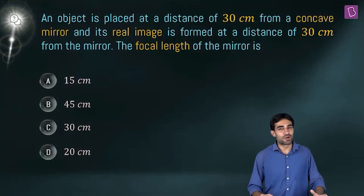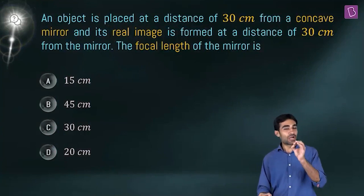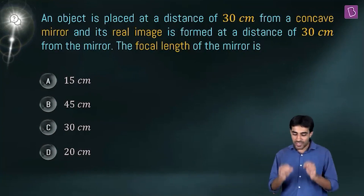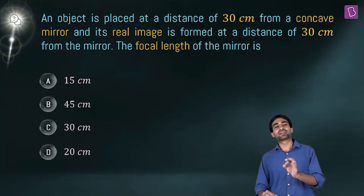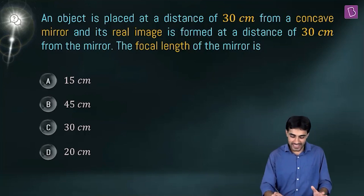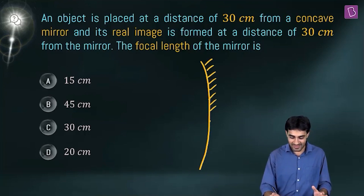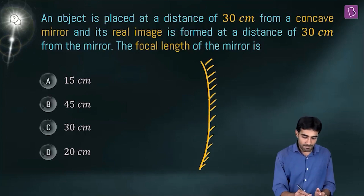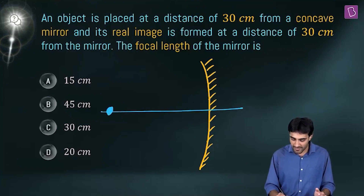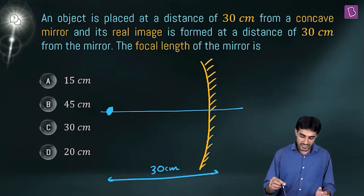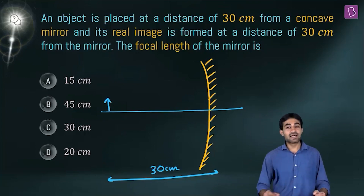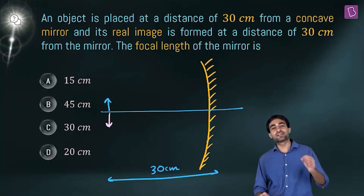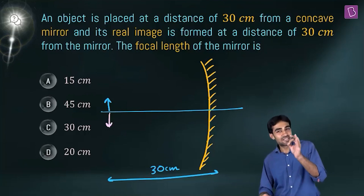Next question: an object is placed at a distance of 30 centimeters from a concave mirror, and its real image is formed at a distance of 30 centimeters again from the mirror. The focal length of the mirror is? We have a concave mirror, the object distance is 30 centimeters, and after reflection the image is also formed at 30 centimeters — so object distance equals image distance.